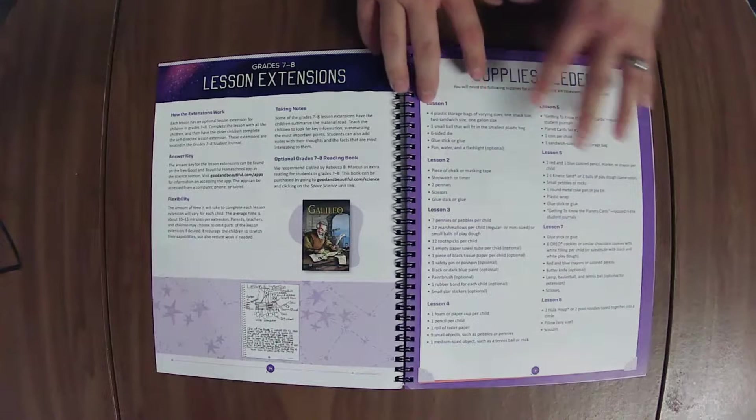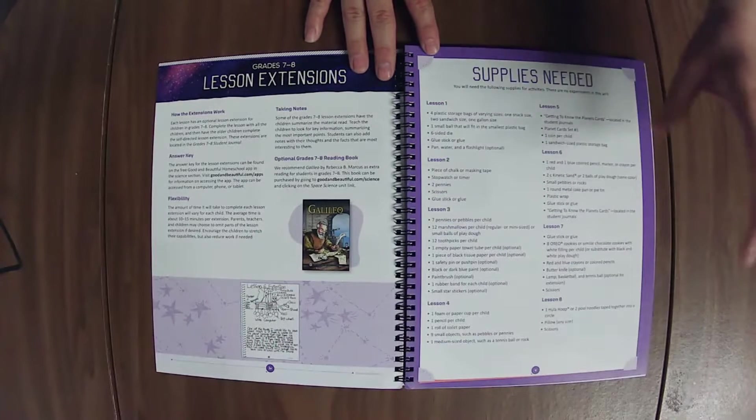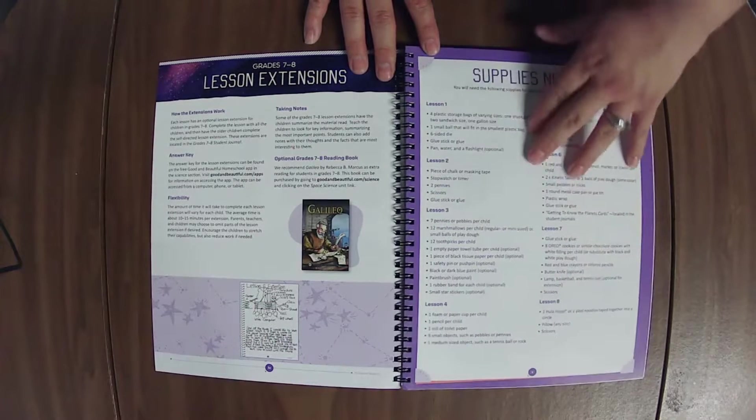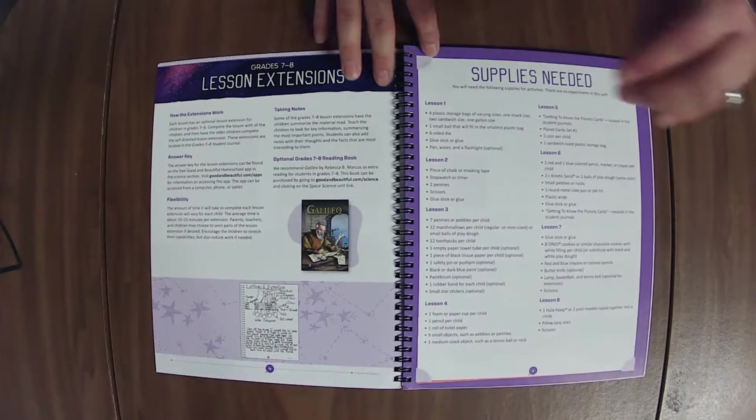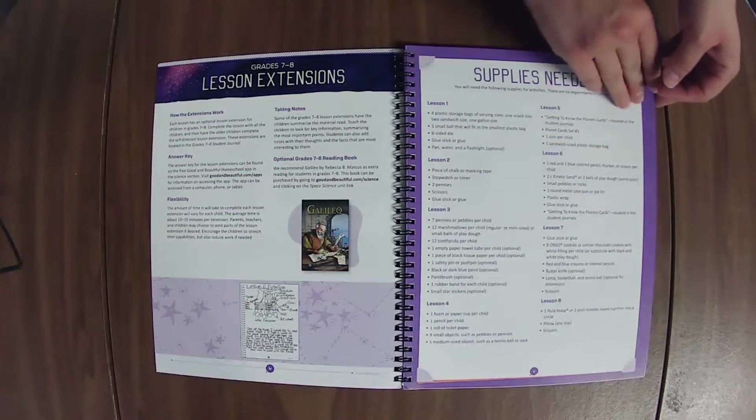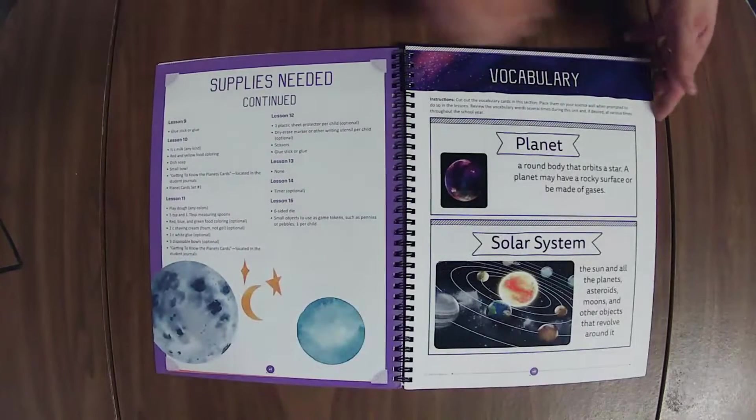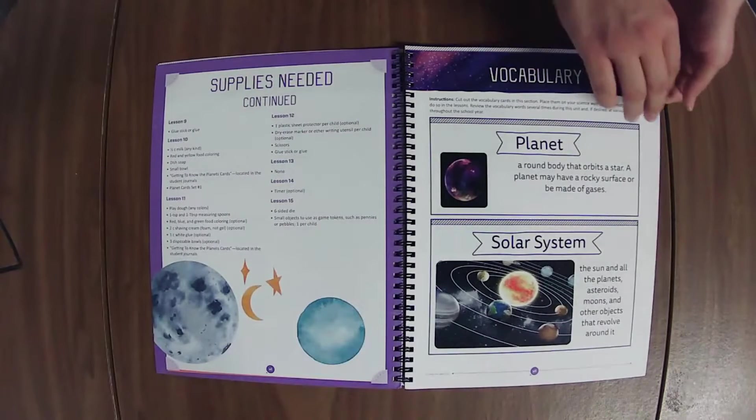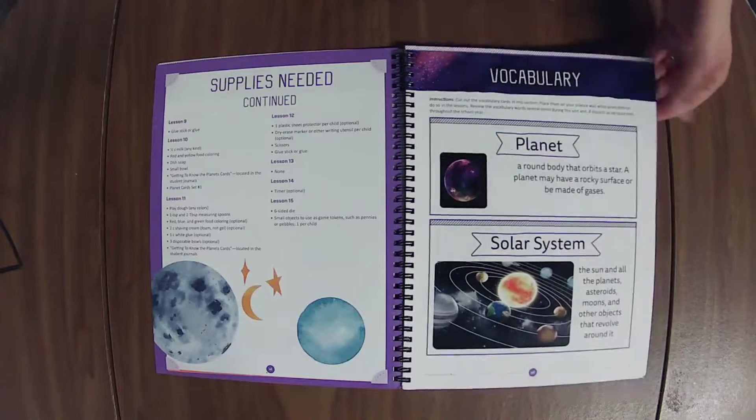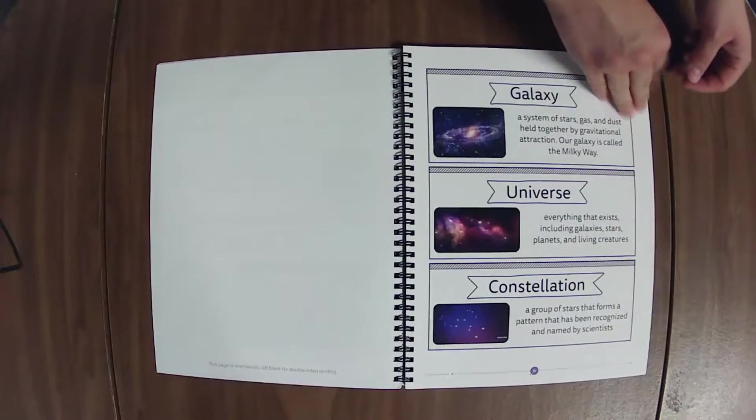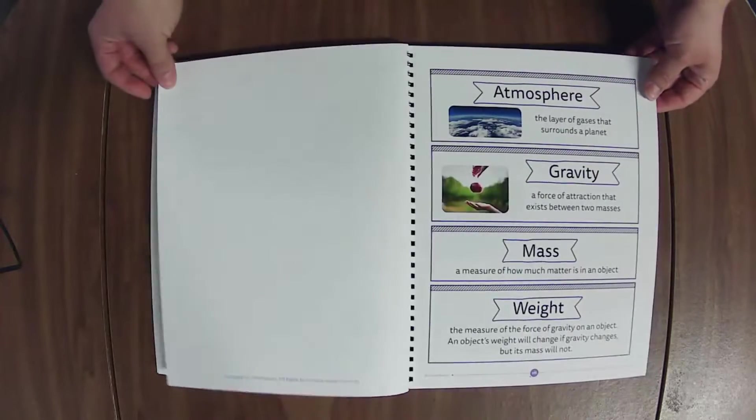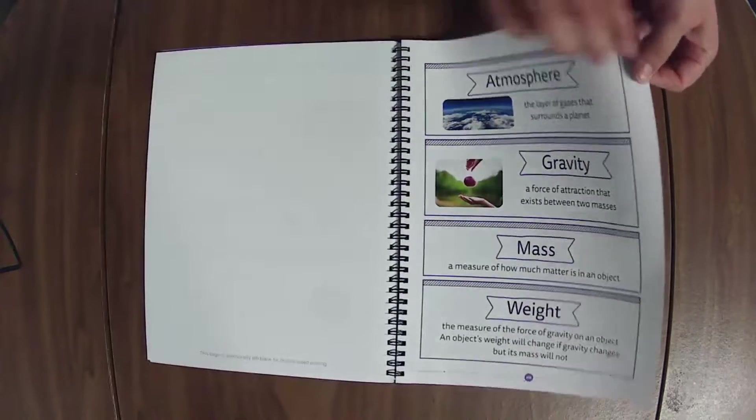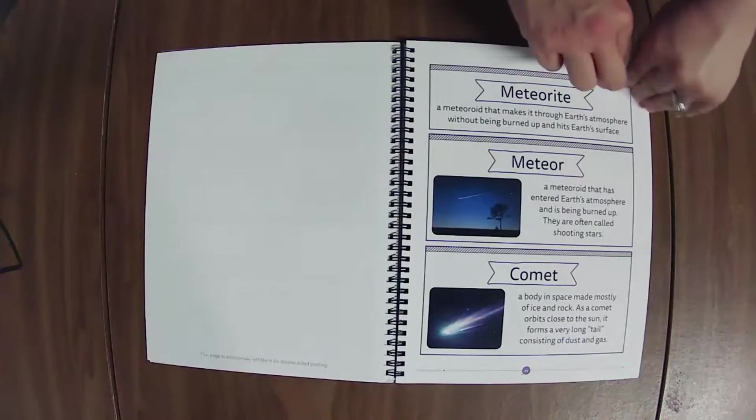The supply list. I like to always give you guys the tip to look through the supply list. If there's something you don't have, check the lesson's activity before purchasing it, just to make sure that's something you actually want to do or that your kids will actually be interested in. The vocabulary. I like to put a little flag here and then we just come back to it and review the words with each new addition to our vocabulary in the lesson.